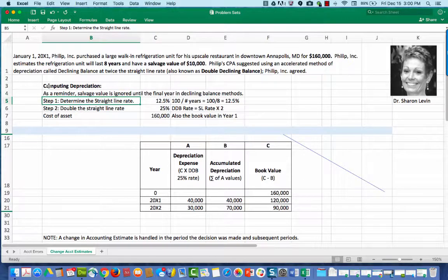Steps to determine the double declining rate? First, you need to determine the straight-line rate of depreciation. You would take 100 divided by the number of years. So we have 100 divided by 8 years equals 12.5%. In other words, if we were going to use straight-line depreciation on this asset, we would be depreciating the asset 12.5% every year for 8 years. But we're not. We're using the double declining balance method. So we're going to multiply 12.5 times 2 and the double declining rate is 25%.